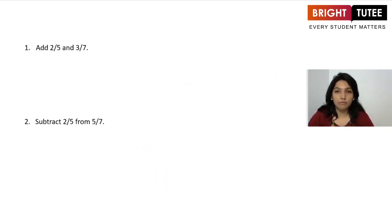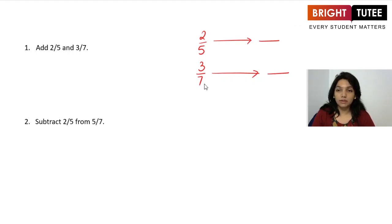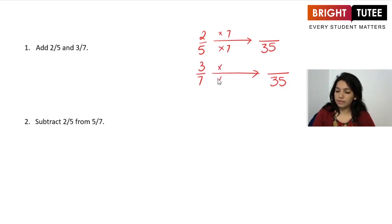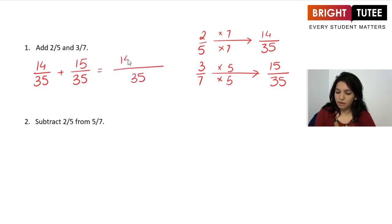Next question: add 2 over 5 and 3 over 7. First step is to calculate equivalent fractions to convert to like fractions. Since 5 and 7 have no common factor, the LCM is 35. Multiplying 2 over 5 by 7 gives 14 over 35, and multiplying 3 over 7 by 5 gives 15 over 35. Adding: 14 plus 15 over 35 gives 29 over 35.